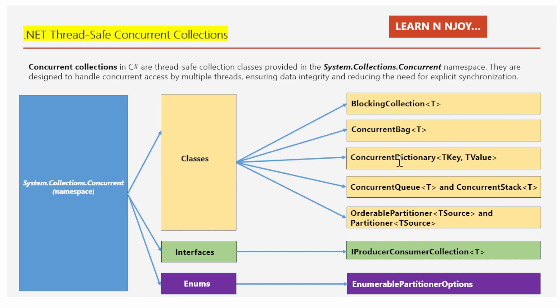Now let's come to ConcurrentDictionary. ConcurrentDictionary is like a recipe book that multiple chefs can write in and read from simultaneously. Each recipe — that is, the key-value pair — is safely stored, so chefs can find what they need without interfering with each other.